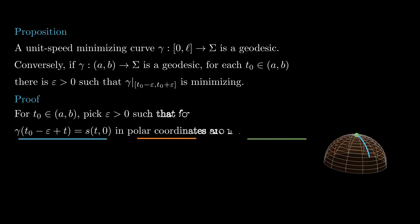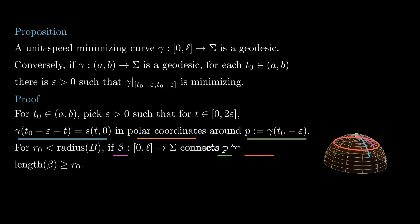Now, to verify the other implication, take T0 and AB, and epsilon small enough so that for T in 0 to epsilon, gamma of T plus T0 minus epsilon can be written as S in polar coordinates around P equals gamma of T0 minus epsilon. By the arguments from the first part, using the Gauss Lemma, we see that for any R0 smaller than the radius of B, any curve beta connecting P to the circle of points with R coordinate R0 has length at least R0. In particular, any curve connecting P with gamma of T0 plus epsilon must have length at least to epsilon,